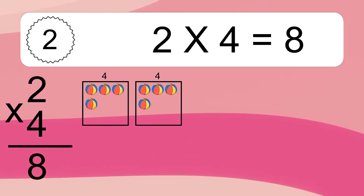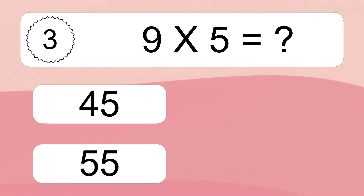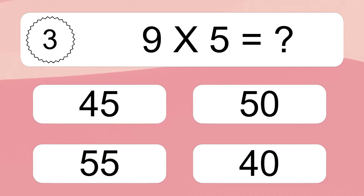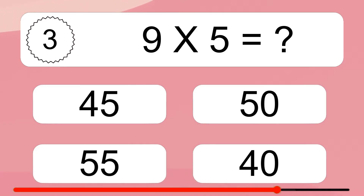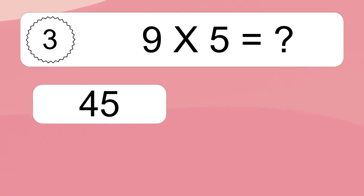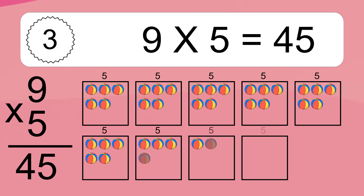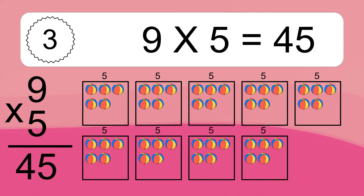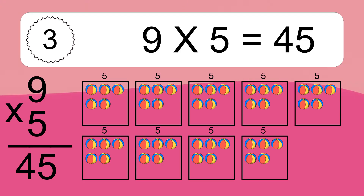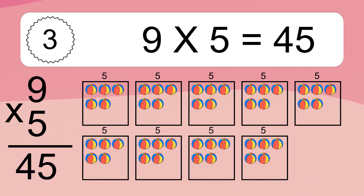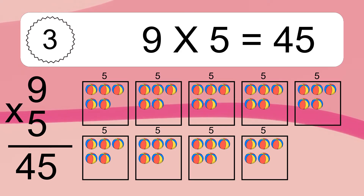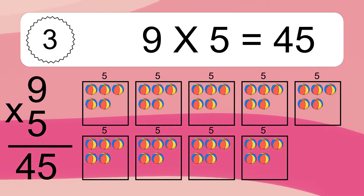This equals 8 balls. 9 times 5 equals what? We have 9 boxes, and each box has 5 colorful balls inside. If you count all the balls in all the boxes together, you will have 9 times 5 balls. This equals 45 balls.